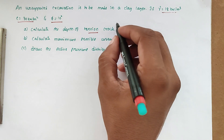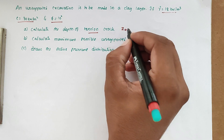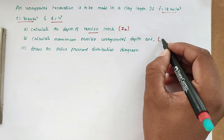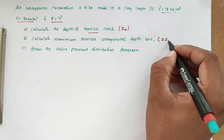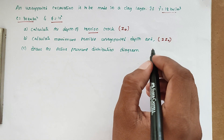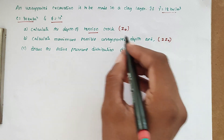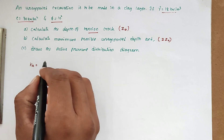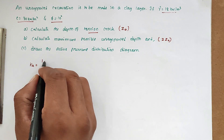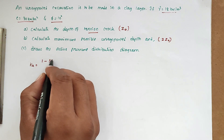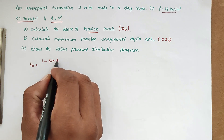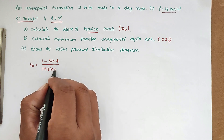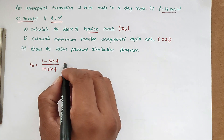First we have to find out z-naught, then the depth of unsupported which is 2 times z-naught, and the maximum earth pressure. So first we find Ka, the coefficient of active earth pressure. The formula is Ka = (1 - sin phi) / (1 + sin phi).